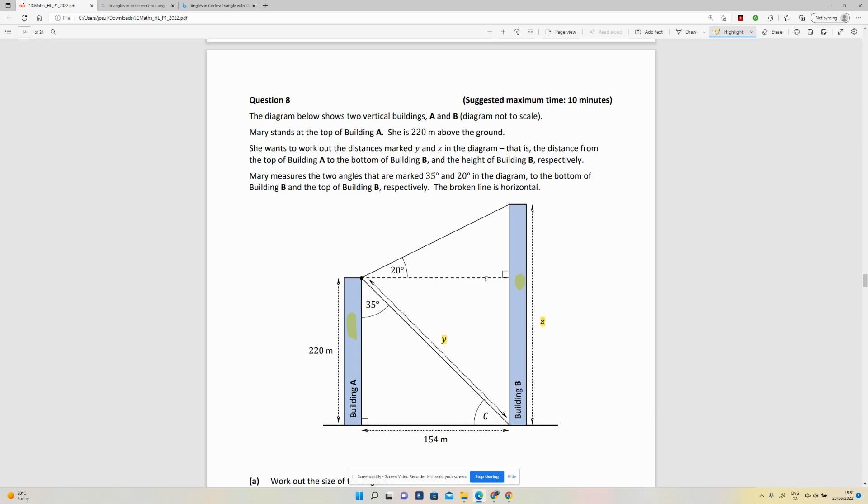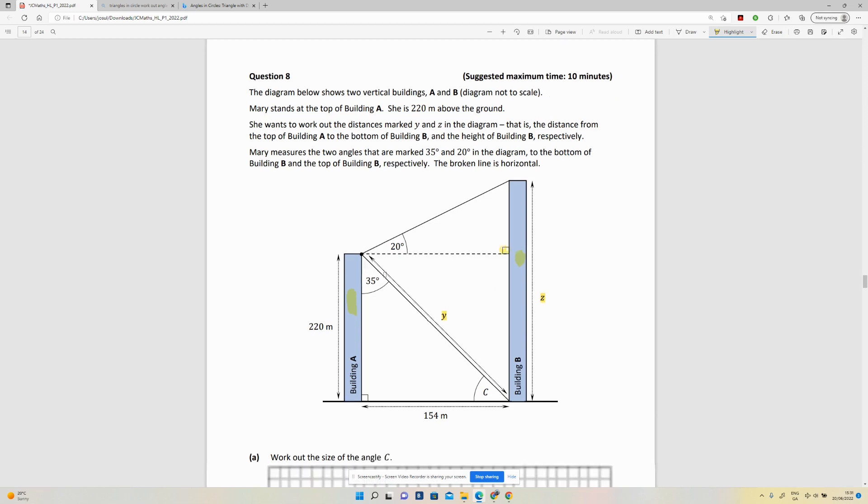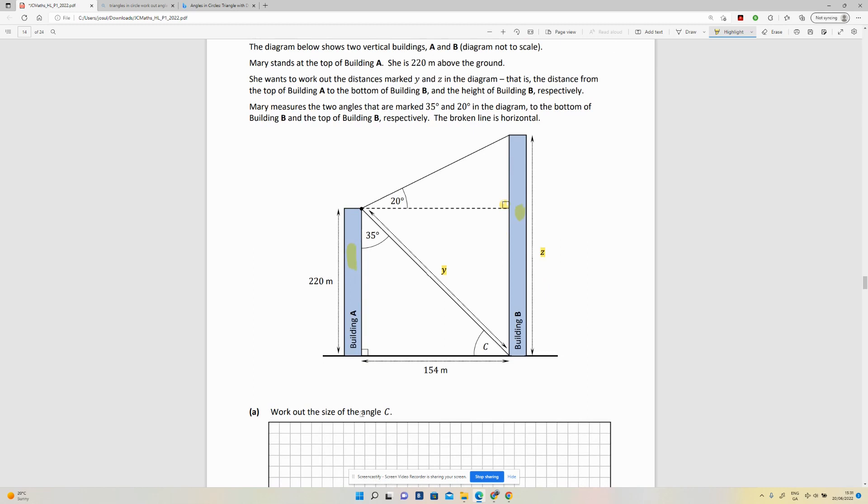Right, so work out the size of angle C. Where's angle C? It's down here on the ground. So we've got a right angle here, we've got 35 degrees here, we've got a C here. So this one is straightforward.